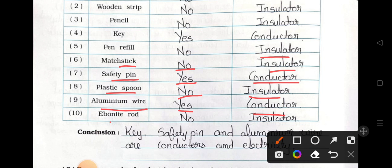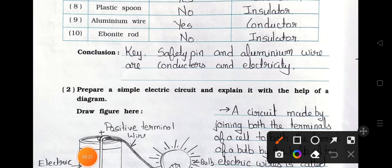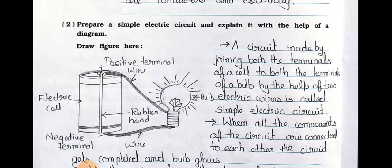Ebonite rod — bulb does not glow — it is an insulator. Conclusion: key, safety pin, and aluminium wire are the conductors of electricity. Now see number two: prepare a simple electric circuit and explain it with the help of a diagram.